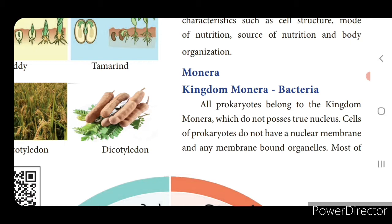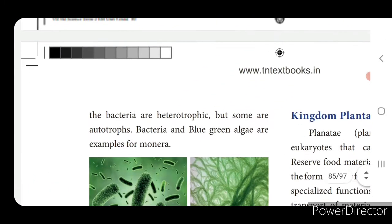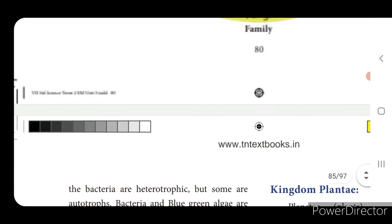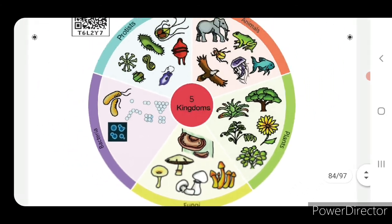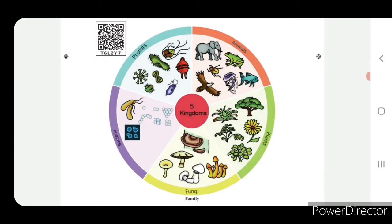Prokaryotes do not possess true nucleus - prokaryotic cell means which is not having nucleus, so it's not having nuclear membrane. Cells of prokaryotes do not have a nuclear membrane or any other membrane-bound organelles. Most bacteria are heterotrophic, but some are autotrophic. Bacteria and blue-green algae are examples for Monera. The five kingdoms include bacteria, fungi, plants, animals and Protista.